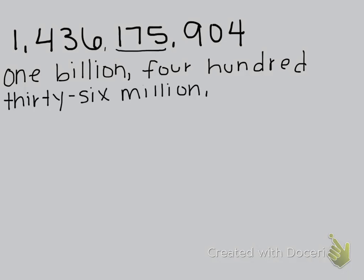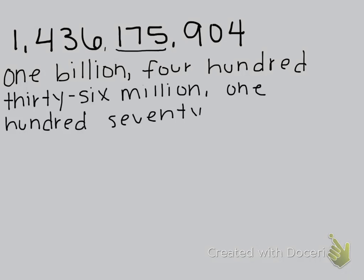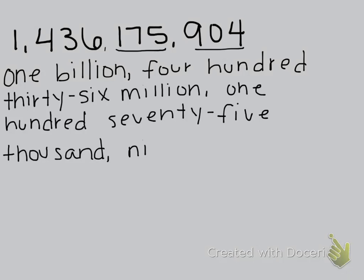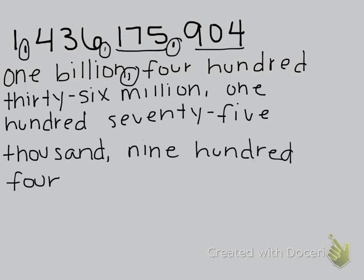Then we have 175 — we read our group of three digits together. I connect my tens and ones with a dash, so one hundred seventy-five thousand, followed by a comma. And then the last part is 904. You always want to read back over what you write and make sure it matches the number — 1,436,175,904. I notice I have three commas in my number and three commas in my word form, so I've done it correctly.